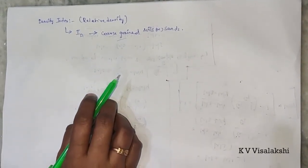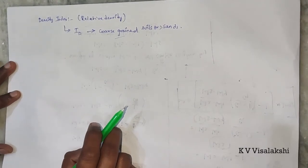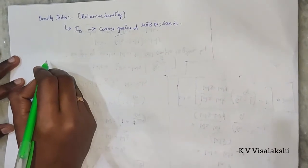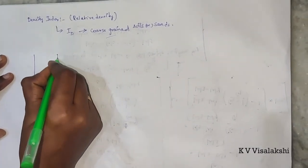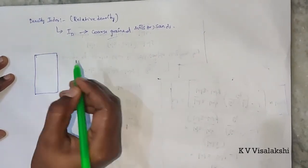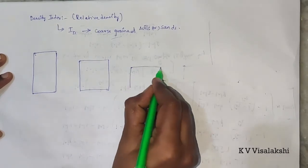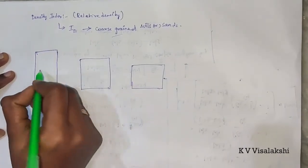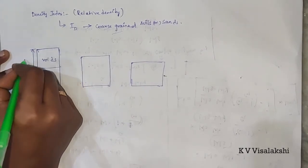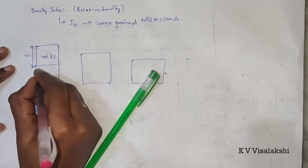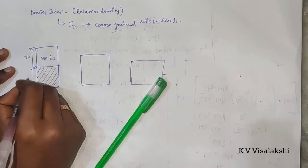We will see what conditions exist with respect to this density index and how the grains are packed in the coarse-grained soil. I will show you the diagrams — what denseness means with respect to void ratio and soil. Here I am taking three cases. This portion is voids — we can take this as VV, that is volume of voids, and here we can take it as solids, designated with VS.